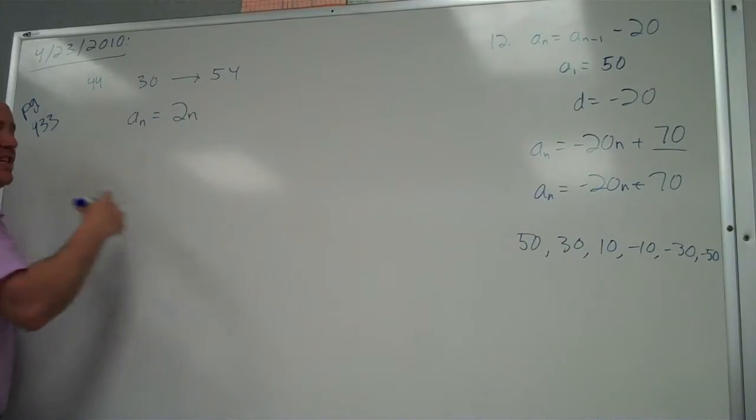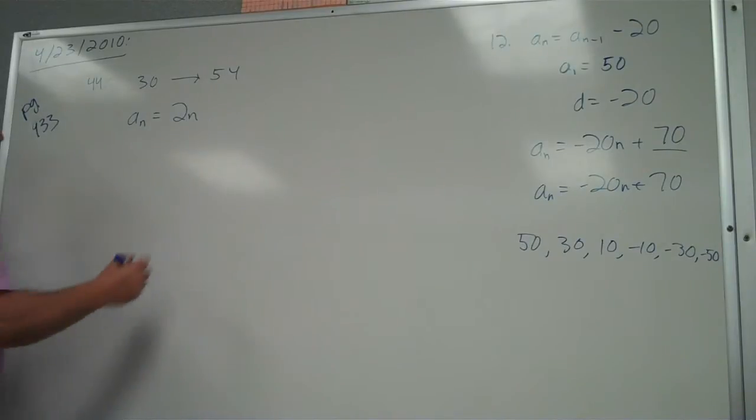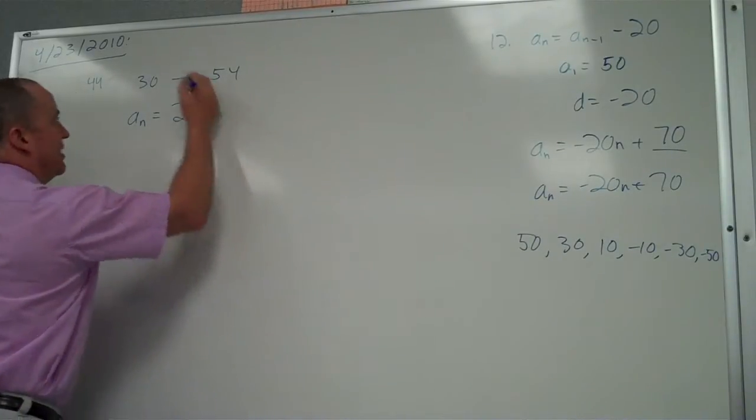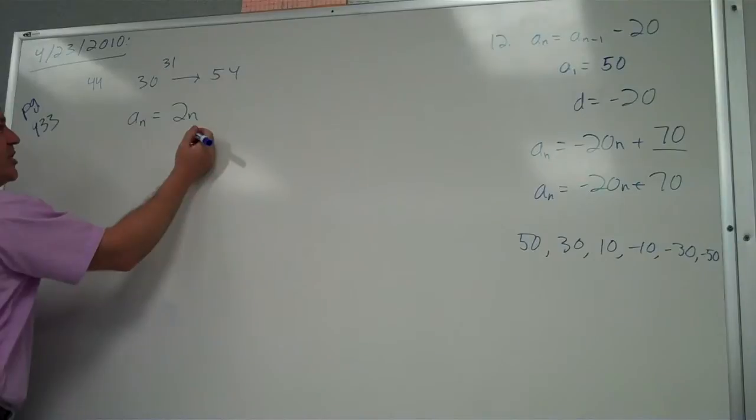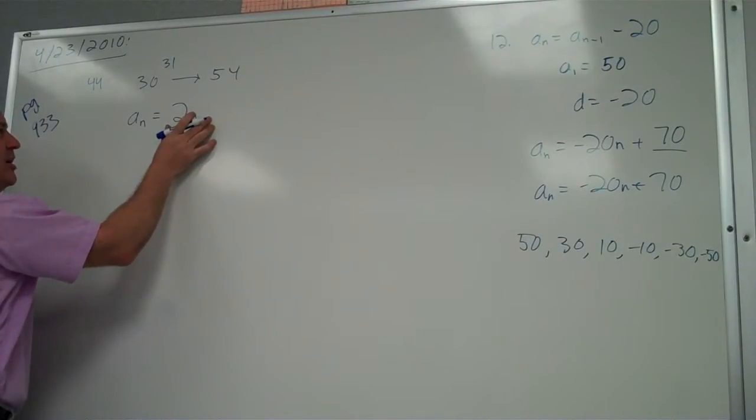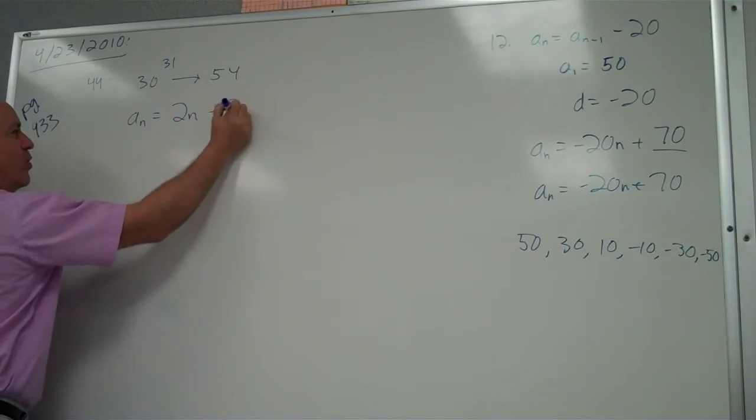It's going to be 2n, because if it's odd terms, it's going up by 2 every time. Alright, so it's going to be 2n. And these things start at 31. What would I have to add to make my first term 31 to 2n? 29.